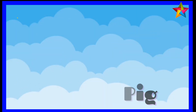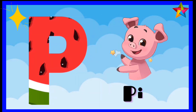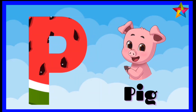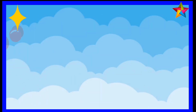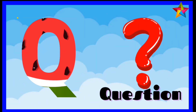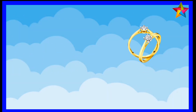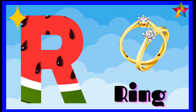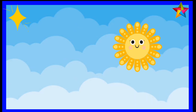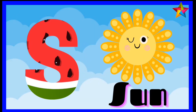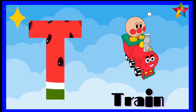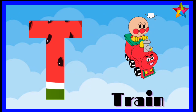Q is for question, q-q-question. R is for ring, r-r-ring. S is for sun, s-s-sun. T is for train, t-t-train.